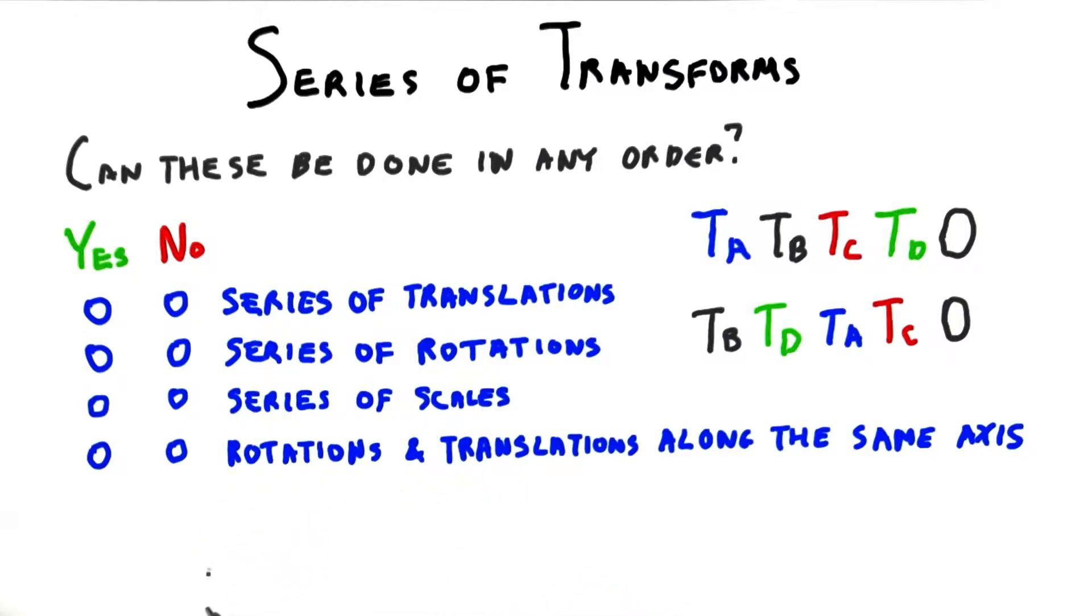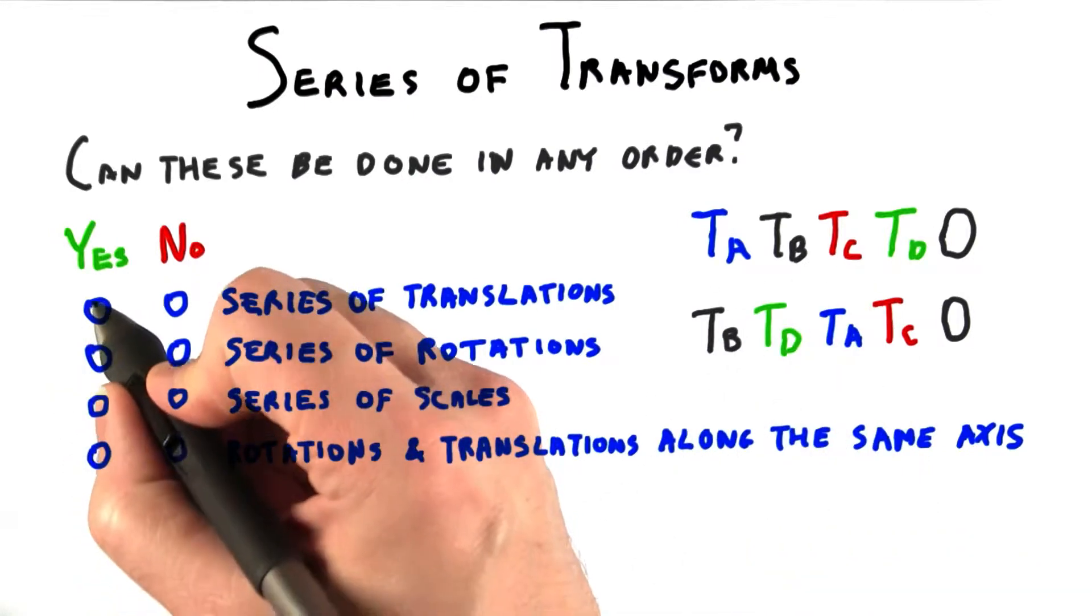For this first one, translations represent movements. Just like vectors can be summed together to make a single movement vector, translations can be multiplied together to get a single translation. The order that we add the vectors doesn't matter. Likewise, translation order among translations doesn't matter. So the answer is yes.